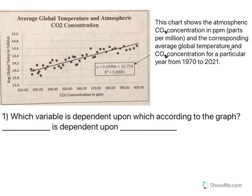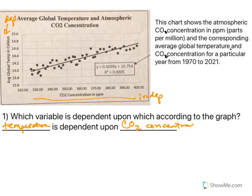Looking at this, which variable is dependent upon which according to the graph? The x-axis or horizontal axis is generally going to be the independent variable, and the y-axis the dependent. So when we're thinking of this, the average global temperature is dependent upon the CO2 concentration. As the CO2 concentration rises, the temperature rises. So the temperature is dependent upon CO2 concentration.